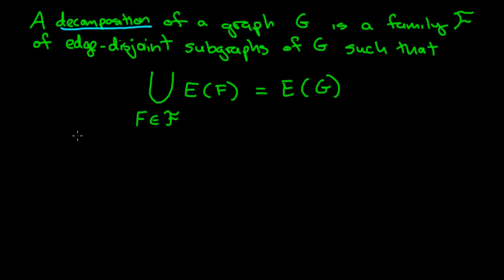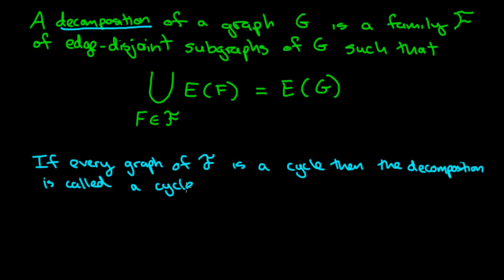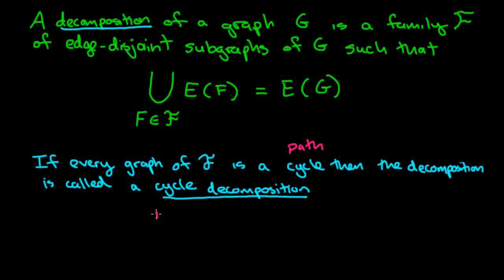If every graph of the family F is a cycle, then the decomposition is called a cycle decomposition. And similarly, if every graph in the family is a path, then the decomposition is called a path decomposition. So for example, if every graph of the family F is in fact a path, then it would be called a path decomposition.